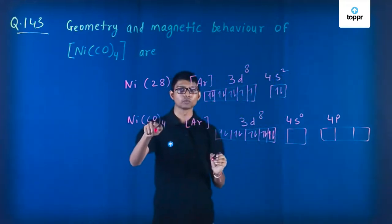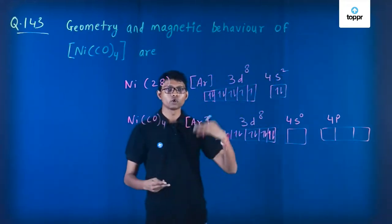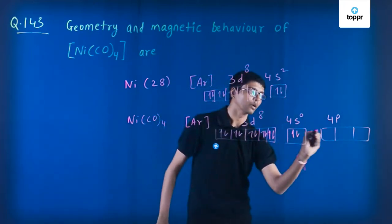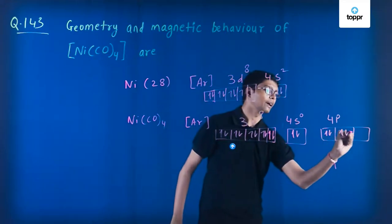There are four carbonyl groups, so each carbonyl donates two electrons to the s subshell and p subshell. So it will be like this: 1, 2, 3, and 4.